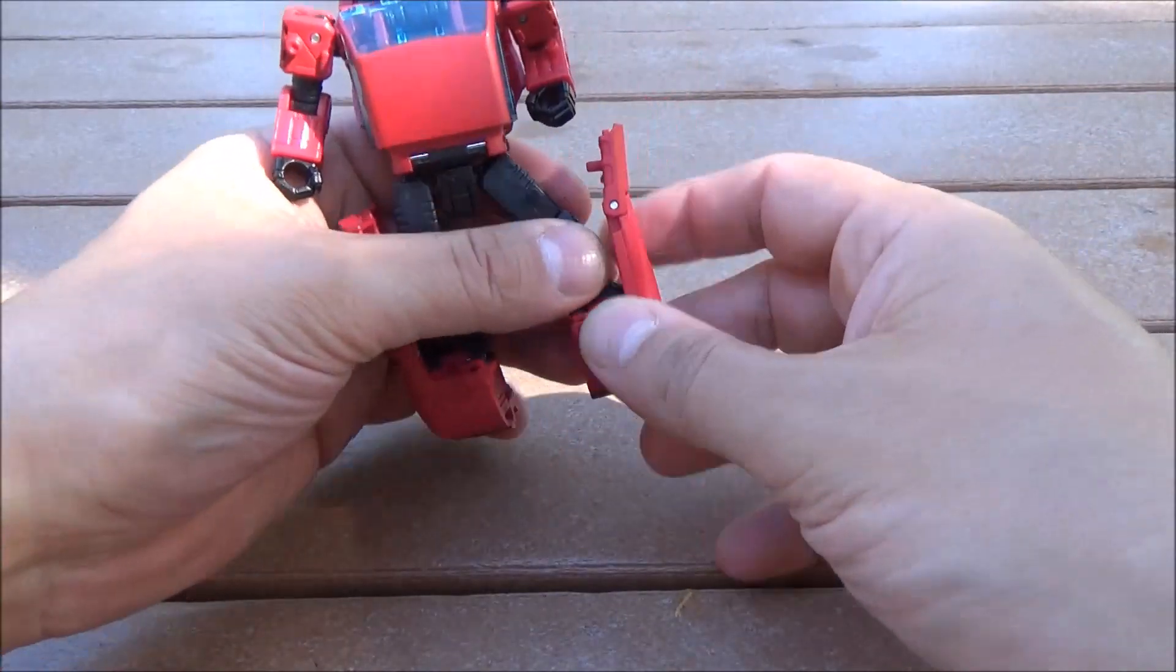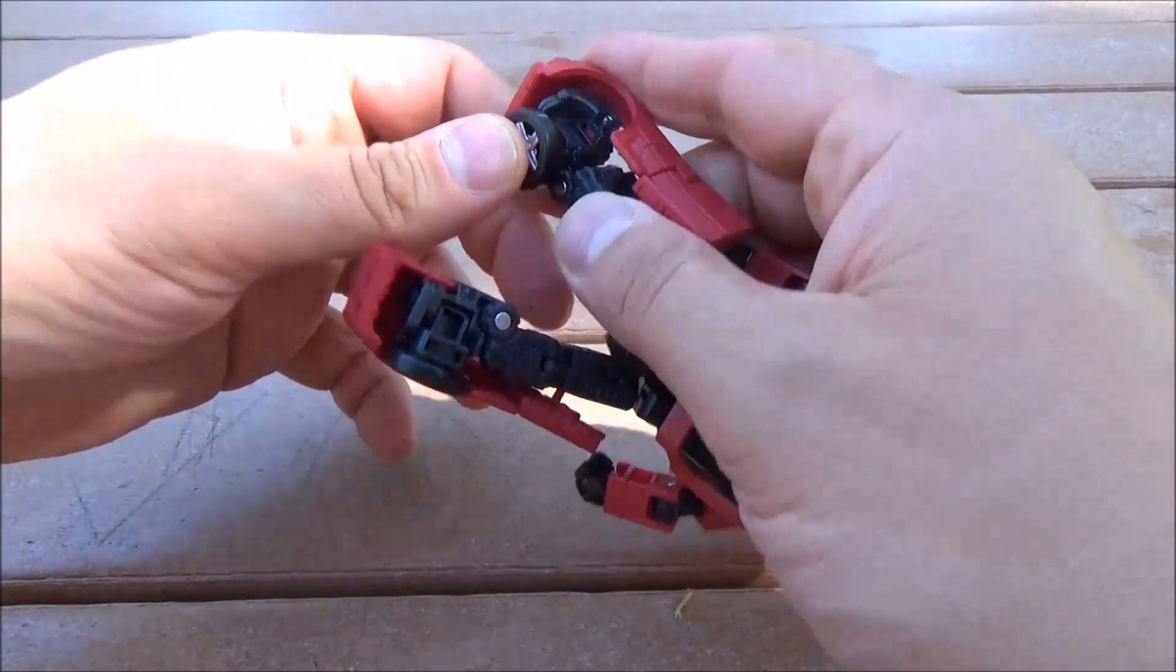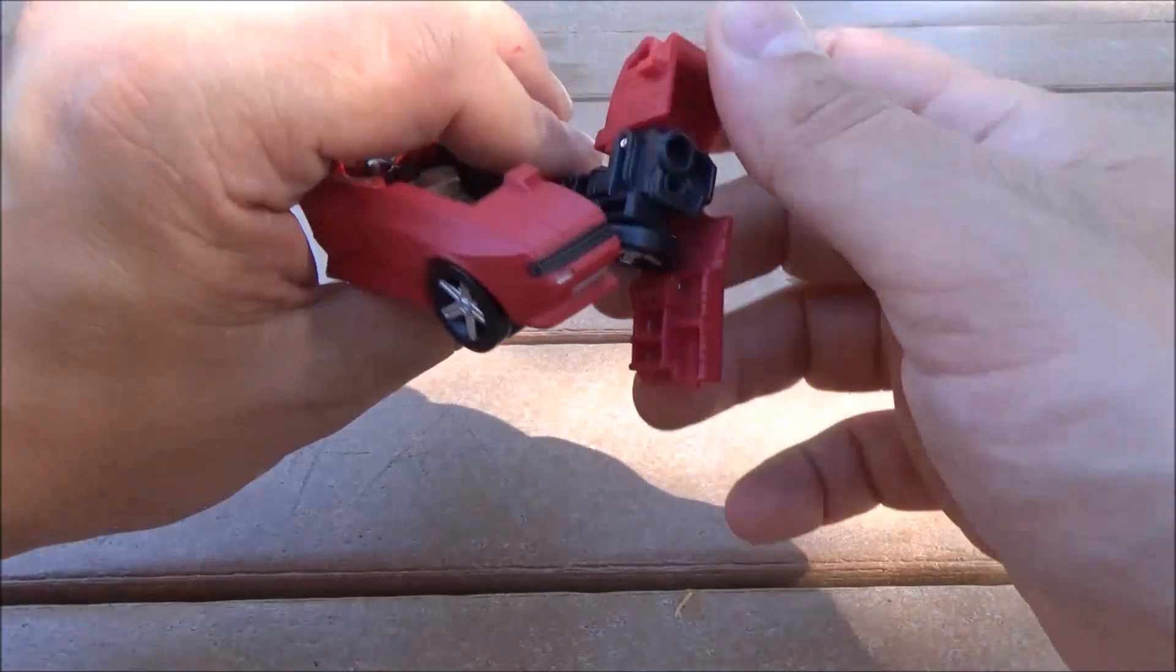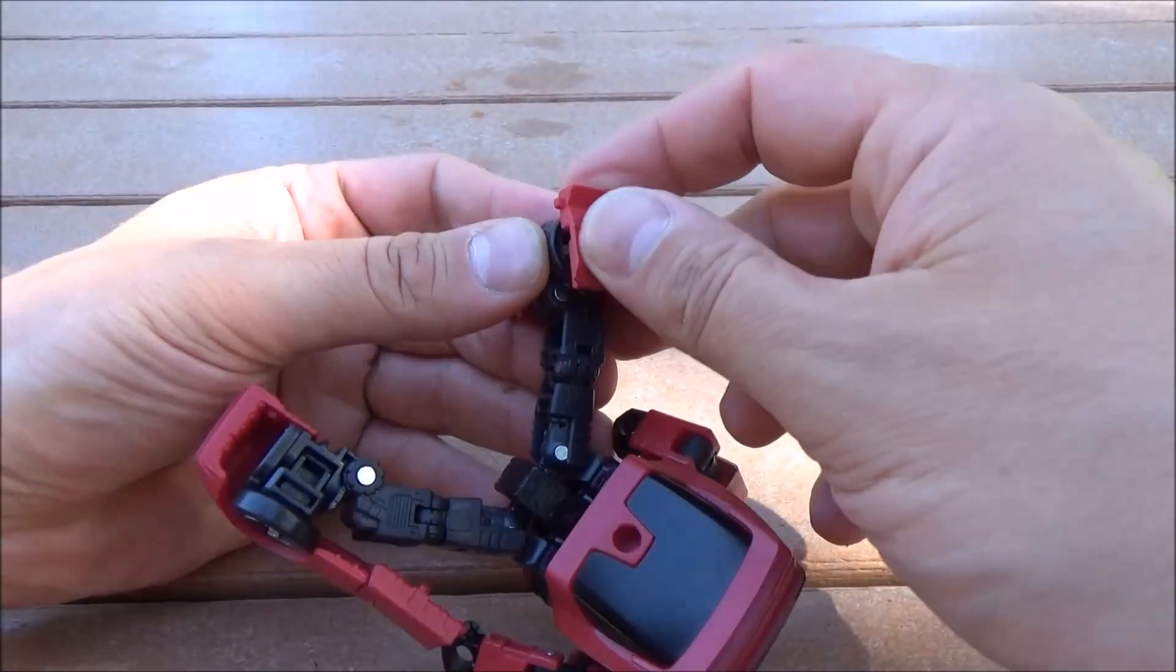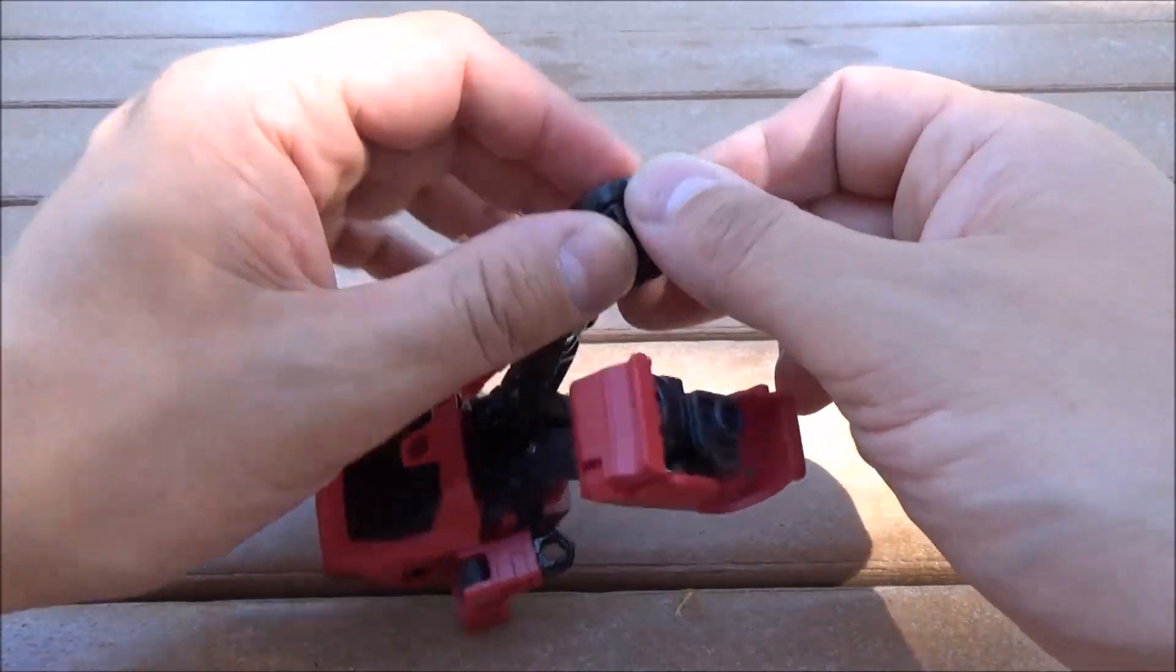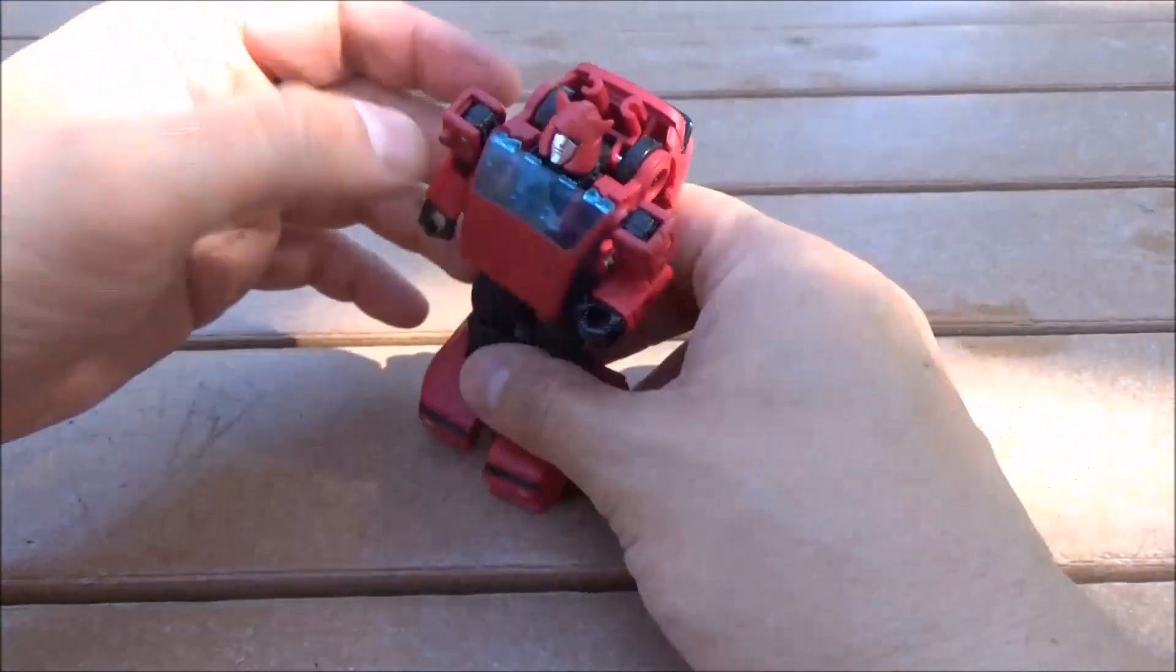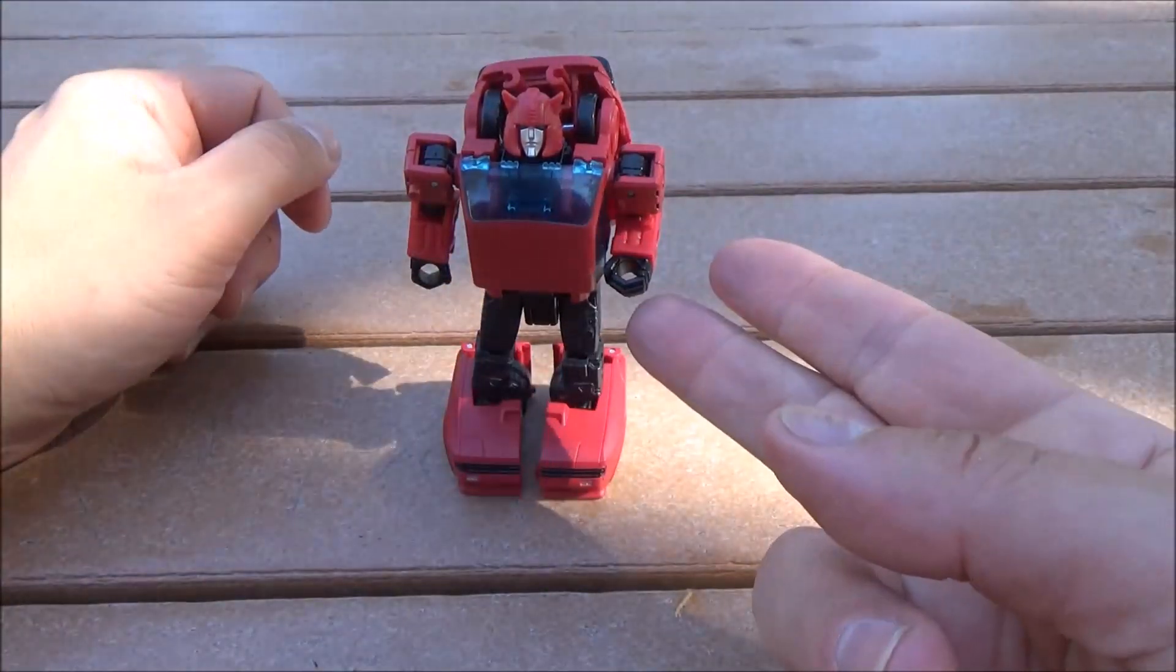Then, fold in the tires, then bring these down and bring into one of the spokes. Repeat with the other leg. There we go. There we go. Cliffjumper robot mode.